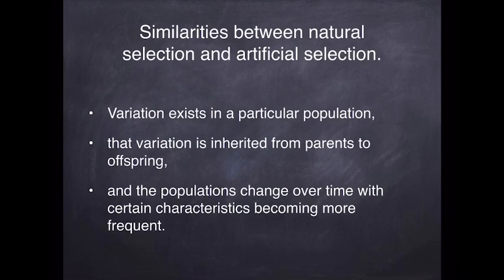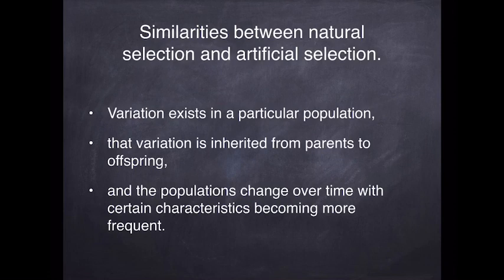In the exam you will be asked to compare natural selection with artificial selection. What is similar between the two is that in each case variation already exists within the population — for example, a field of maize plants exposed to the same conditions will not all be the same height or produce the same number of flowers. In both cases, variation is inherited from parents to offspring, and regardless of whether it's artificial or natural selection, populations will change over time.